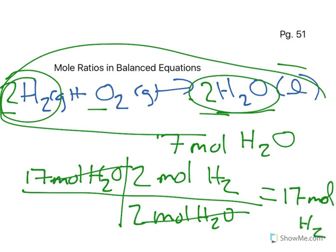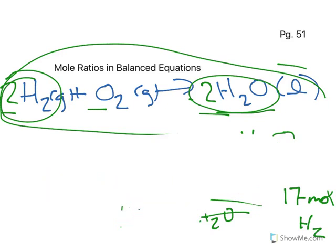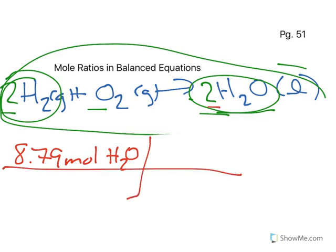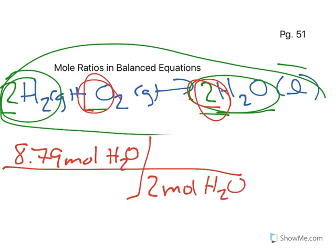Let's say I want to make 8.79 moles of H2O. How much oxygen would that take? Well, according to my coefficients, there are 2 moles of water for every 1 mole of O2.